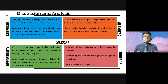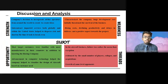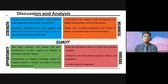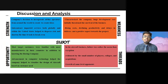SWOT analysis is the tool to examine the internal and external factors of the company. The strength of the company is its decision to incorporate airline operators from around the world to create ideas and design the Boeing 777 project. The weakness is that the company's huge development costs initially threatened the survival of the business, as rising costs and declining productivity negatively affected the project.